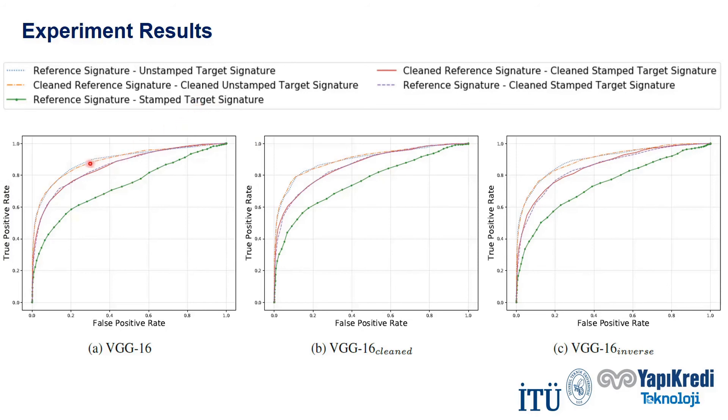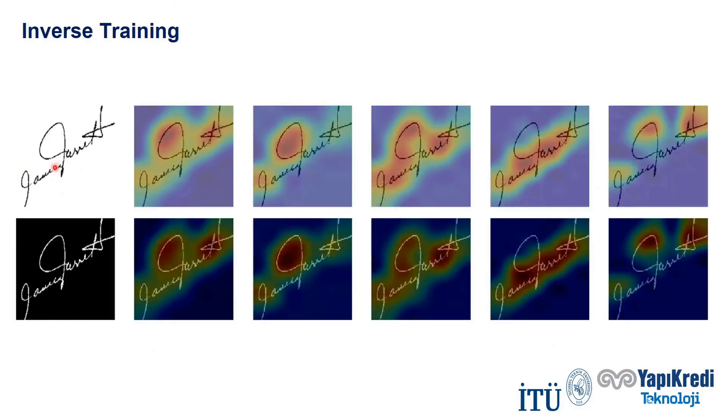We also report our results as ROC curves. The blue dotted line shows the setup with unstamped target signatures. When we compare it with green line, it is easy to see that performance deteriorates significantly when stamped signatures are targeted. We get the purple and red lines when we apply our cleaning method to stamped target and reference signatures respectively. ROC curves show how effective our solution is.